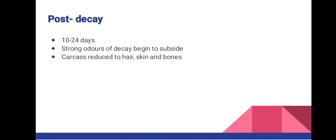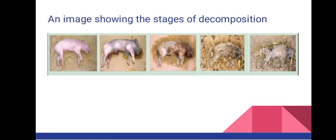The fourth stage is post decay, which occurs 10 to 24 days after death. Decomposition slows as most of the flesh has been stripped off from the skeleton, and strong odors of decay begin to subside. The body may form a wax layer known as adipocere. The carcass is reduced to hair, skin, and bones. In relation to forensic entomology, fly population is reduced and replaced by other insects like beetles. In the fourth image you can see the characteristics mentioned — it is basically skin, bones, and fur.